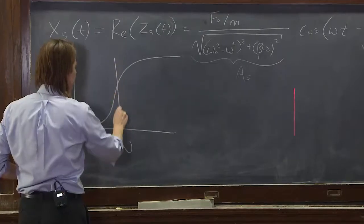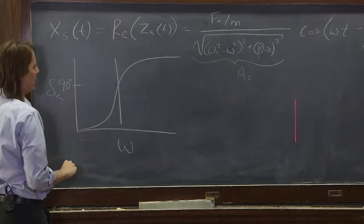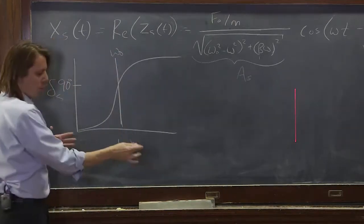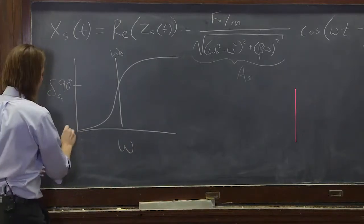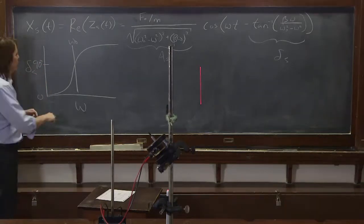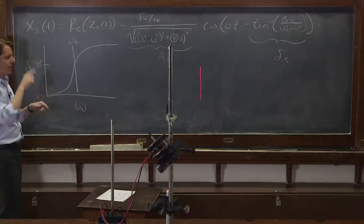And it goes through 90 degrees, exactly at omega naught. So when you're really low, it's at zero degrees. This means that the drive and the response are exactly in phase. There's no phase lag. When you're right on omega naught, when omega equals omega naught, they're 90 degrees out of phase.